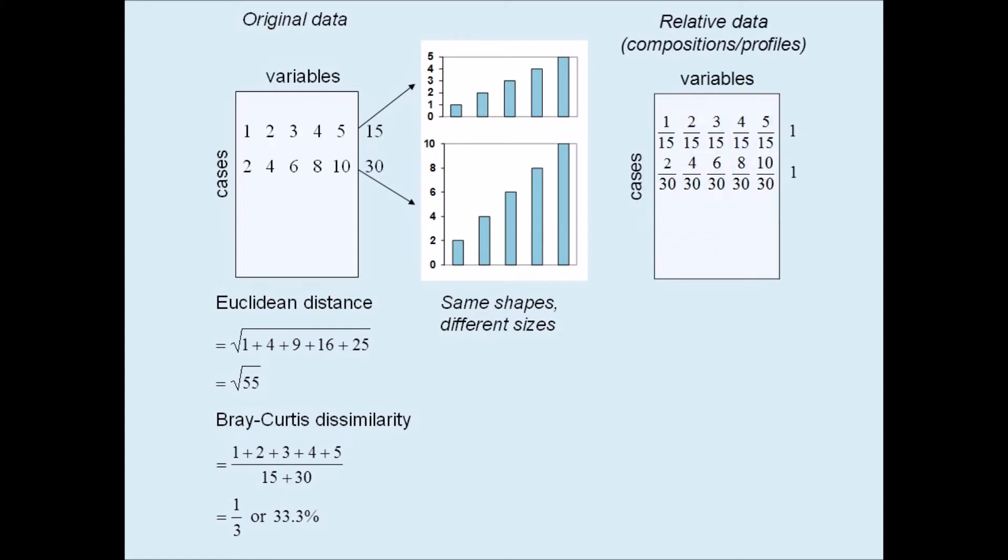If the counts are expressed as relative ones, called compositions or profiles, which sum to 1, then the two profiles are identical and the Euclidean distance, as well as the Bray-Curtis dissimilarity, are clearly both 0.